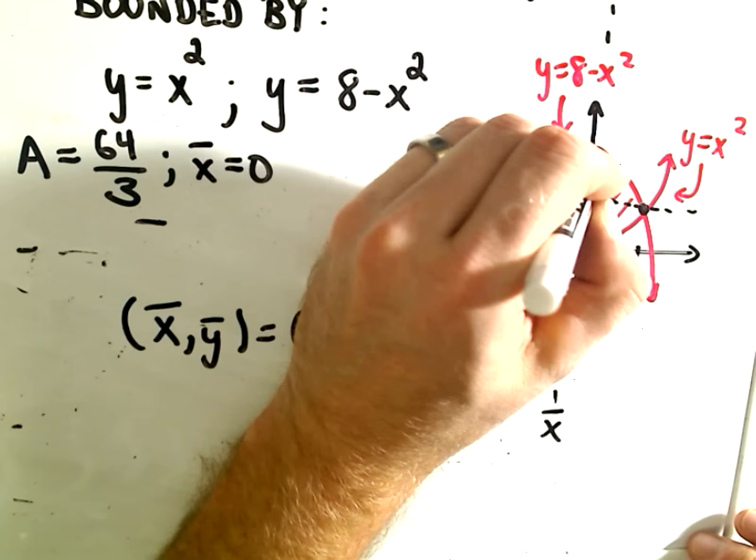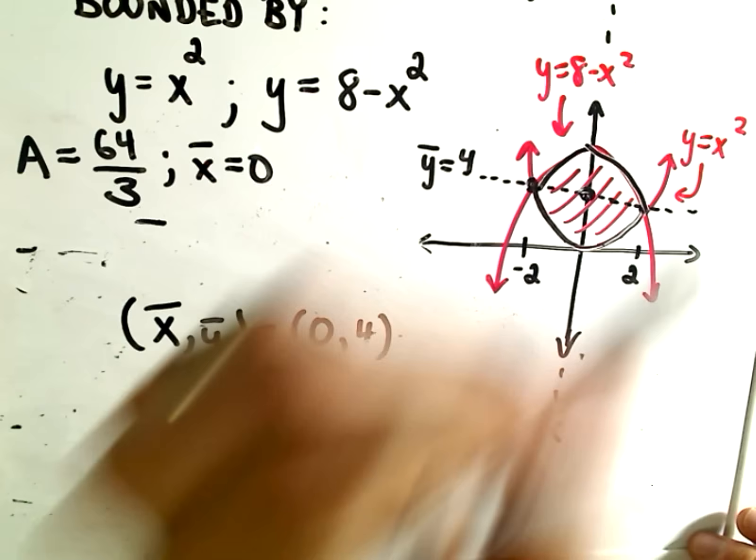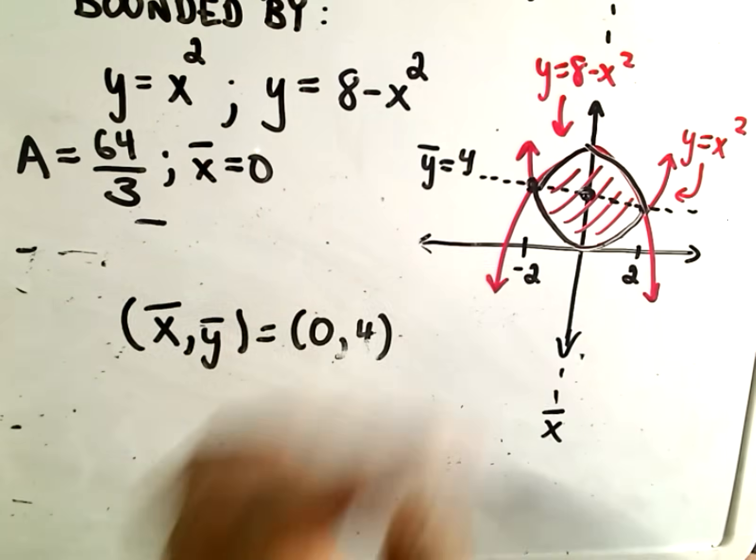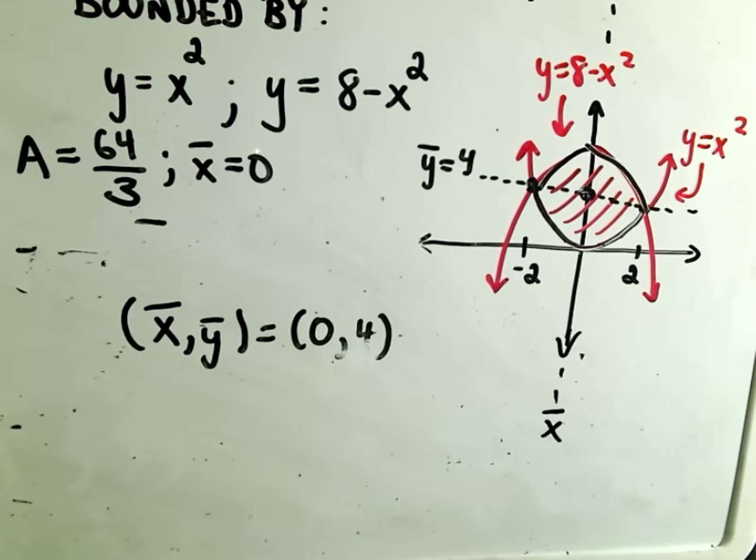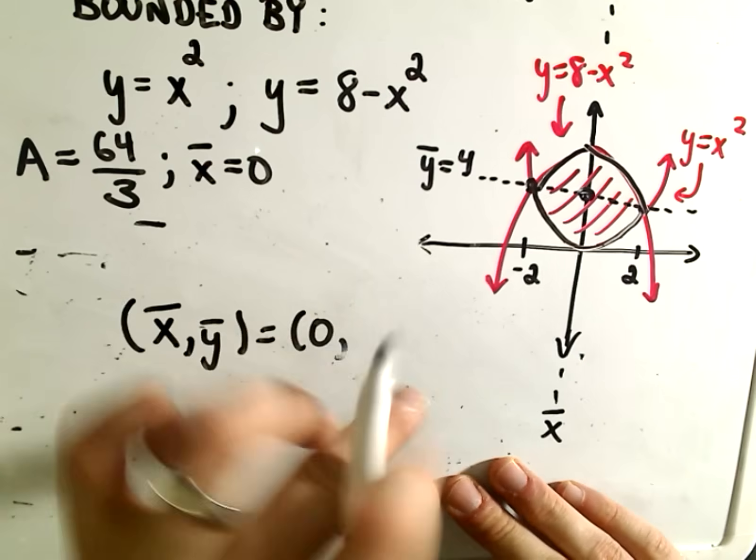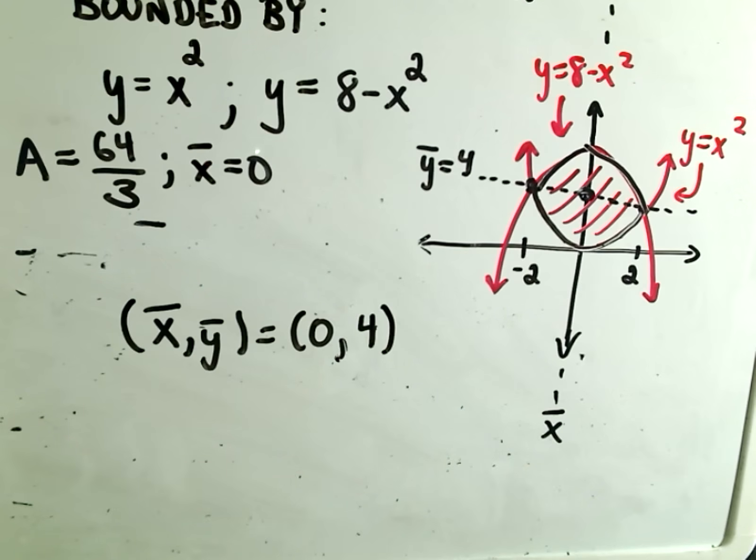If you were to imagine this as a little piece of metal floating in space, if you put your pencil underneath it at the point (0, 4), this region would exactly balance. Everything agreed with our intuition despite all the long computations. Just kind of tedious and long to do, but hopefully not too tricky.